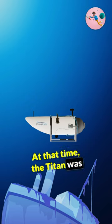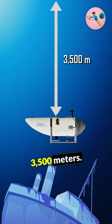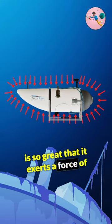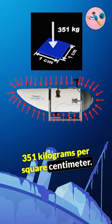At that time, the Titan was estimated to be at a depth of 3,500 meters. At this depth, the water pressure is so great that it exerts a force of 351 kilograms per square centimeter.